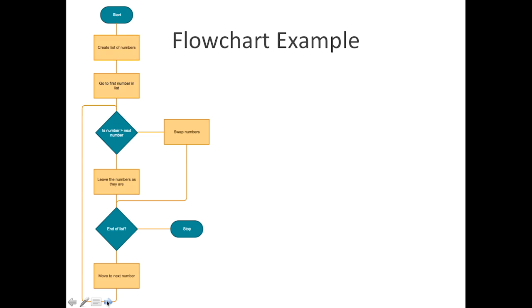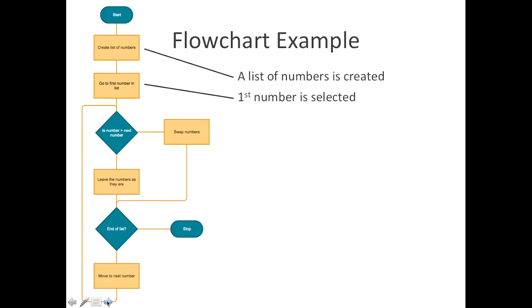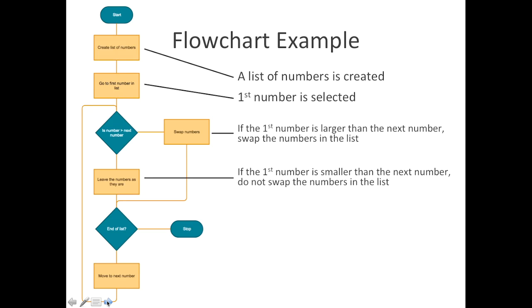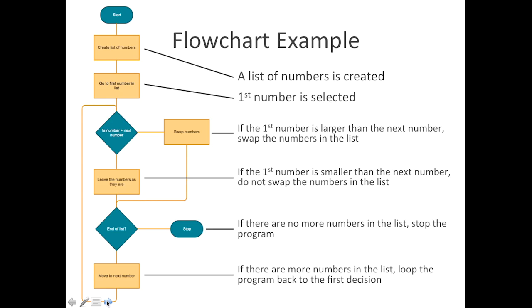Let's look at an example algorithm that bubble sorts a set of numbers generated in a list — yours may not look exactly the same but the outcome should still work. We have our terminator, then we create a list of numbers, go to the first number in the list, and if it is greater than the next number we swap them. If it's smaller we leave them. We then ask if there are more numbers in the list: if yes we carry on, otherwise we stop. Moving to the next number and looping back around is essentially our for loop.